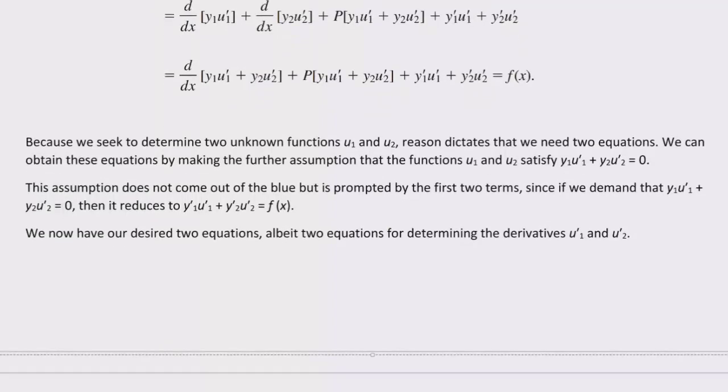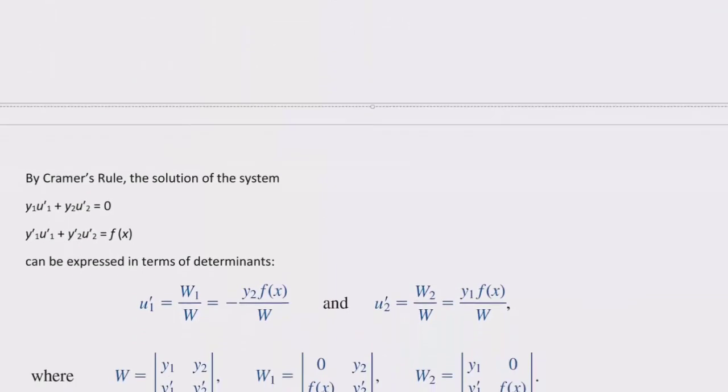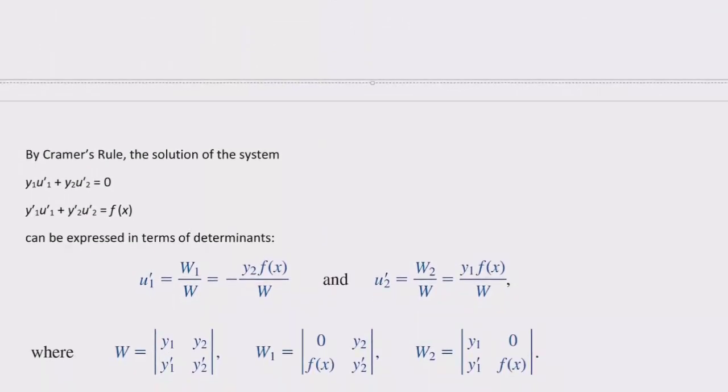So because of that, we end up bringing into this process our Wronskian. Okay, so the short version is with that second degree polynomial and those two different substitutions, we end up having a system of equations for our Y1s and Y2s that we end up solving by the fact that the original is equal to zero and then the first derivative is equal to the F of X from the original expression. This is the key part right here.